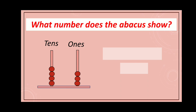What number does the abacus show? Here you can see two rods. The rod on the left side is considered for tens, and the rod on the right side is considered for ones. As you can see, there are some beads on tens and ones. Let's count the beads on ones first: one, two, three — three ones. And four beads on tens — four tens. So four tens plus three ones makes the number 43.